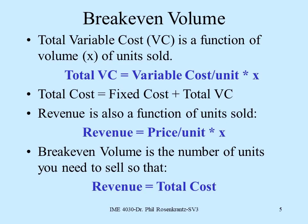Breakeven volume is what I want to talk about now. We need to establish the total variable cost as an equation — it's a function of the number of units sold. The total variable cost is the variable cost per unit, meaning how much we're spending for each unit we're producing for variable items like labor and materials, multiplied by how many units we sell. Our total cost, therefore, is the sum of the fixed cost plus the total variable cost. Revenue is also a function of units sold: it's the selling price per unit times the number of units sold.